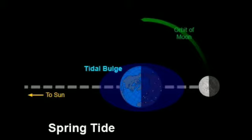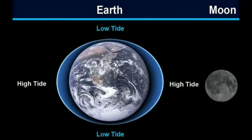Tides behave differently in various parts of the world. Some coastal areas experience a regular pattern of one high tide and one low tide each day, known as diurnal tides. This pattern is common in shallow inland seas such as the Gulf of Mexico and along the coast of Southeast Asia. In many areas, including the Atlantic coast of the United States, there is a high-to-low tide sequence repeated twice a day, termed semi-diurnal tides. These tides usually reach about the same level at high and low tide each day.